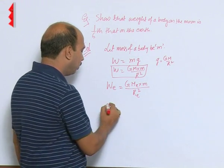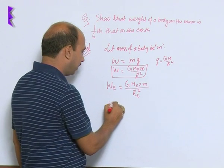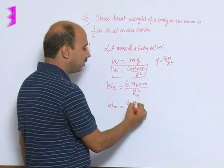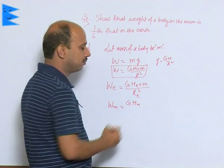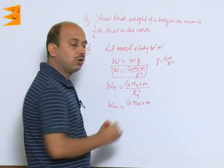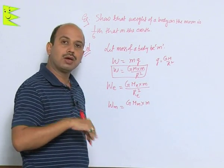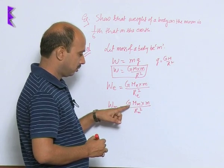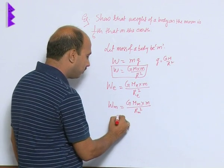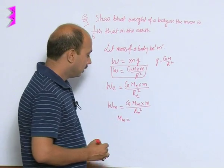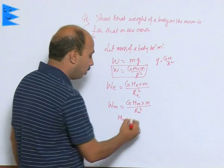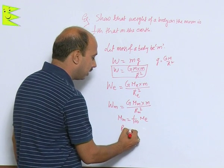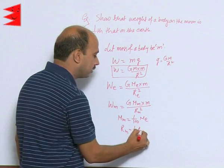Similarly, we can write the weight of the body on the moon: W_m equals G times mass of the moon into mass of the body upon R_m squared. Mass does not change whether you are on the earth or on the moon. We know the mass of the moon is 1/100 of the earth, and the radius of the moon is 1/4 the radius of the earth.